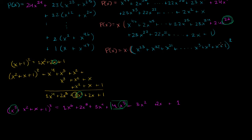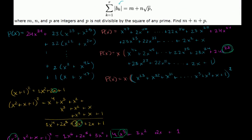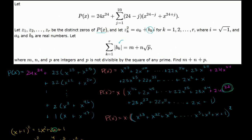Where we left off in the last video, we had somewhat simplified our polynomial p of x from the way it was originally described in the problem. But it still doesn't seem like we're any closer to finding the roots. At least we were able to reduce the degree from a 47th degree polynomial to the product of a first degree and a 23rd degree polynomial.